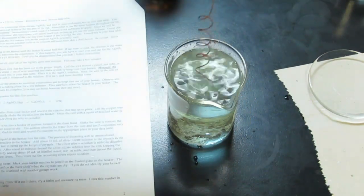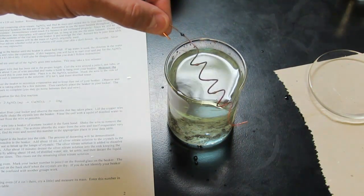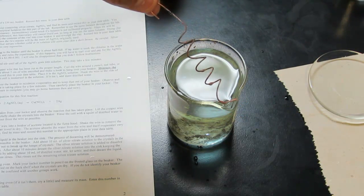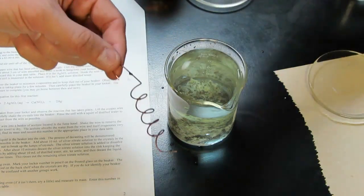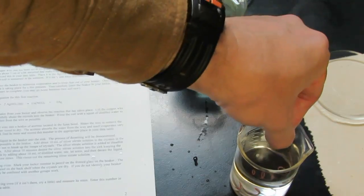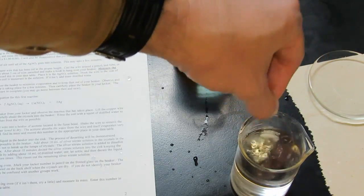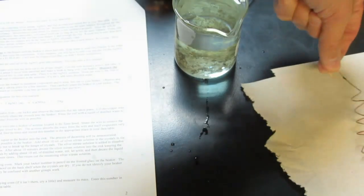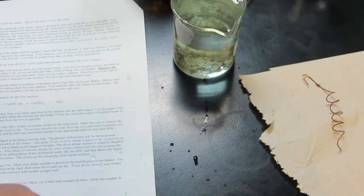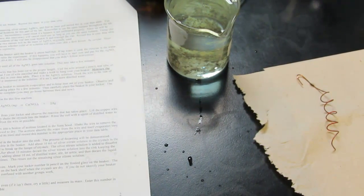Since we need to find the mass of this copper wire so we can determine how many copper atoms went into solution, we're going to dip it in acetone. Acetone adheres to water molecules on the copper wire and evaporates very quickly. We'll give that a good shake and then put that copper wire on a paper towel and let it sit for a few minutes. As it sits, the acetone evaporates and pulls water molecules away with it, so it dries it nice and quickly for us.